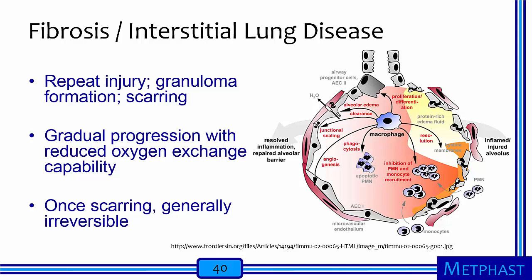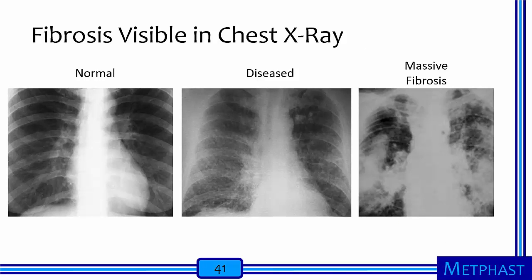Fibrosis, or interstitial lung disease, results from the inability of a macrophage to remove a particle from the alveolar region, resulting in repeat injury, granuloma formation, and scarring. This disease typically occurs gradually over a working lifetime with progressive loss of oxygen exchange capability. Once scarring occurs, it's generally irreversible. Fibrosis is visible in chest x-rays. X-rays are unimpeded by normal healthy lung tissue, appearing dark black. In contrast, granulomas and scarring block x-rays so that there are white spots throughout the lung. In massive fibrosis, the lung tissue is often difficult to differentiate from bone because of the extensive scarring of alveolar tissue.